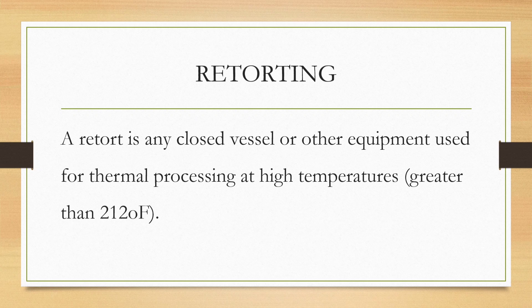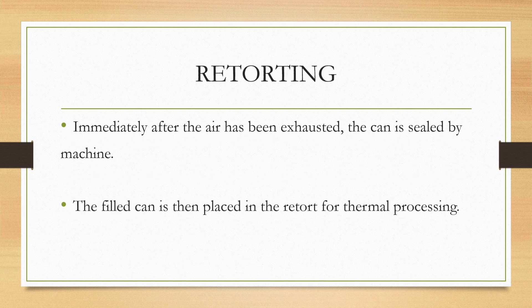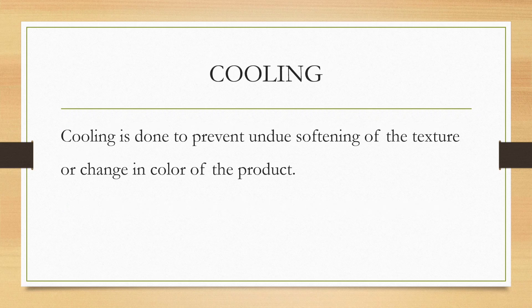Retorting is a closed vessel or equipment used for thermal processing. After the can is packed and sealed, it is put into a retorting machine, subjecting the can to heat treatment and destroying harmful microorganisms. The retorting temperature is always greater than 212 degrees Fahrenheit. Immediately after exhausting, the can is sealed and then placed into the retorting machine for thermal processing.